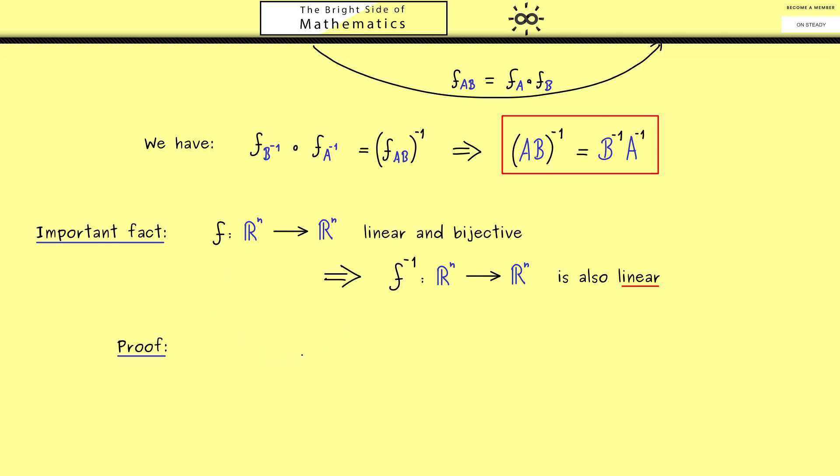In other words, we have to check what F inverse does to the scalar multiplication and to the vector addition. Therefore, let's start with the scalar multiplication. Hence we start by putting the vector lambda times y into the function F inverse. And then in the first step, we want to use the bijectivity of our function. This means we find exactly one vector x such that F of x is equal to y.